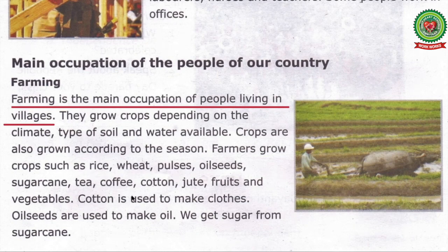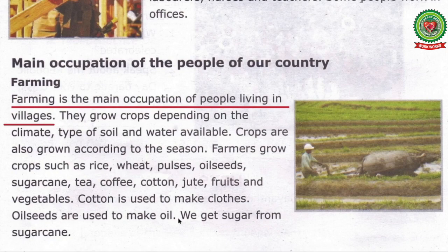Cotton is used to make clothes. Oil seeds are used to make oil. We get sugar from sugar cane. What is used to make clothes? Cotton is used to make clothes. Name the plant from which we get sugar. We get sugar from sugar cane.